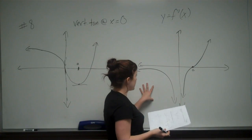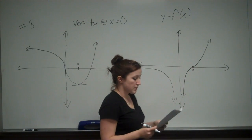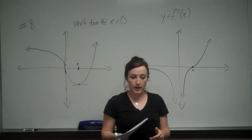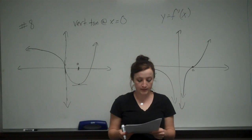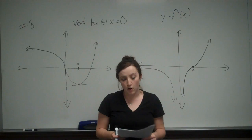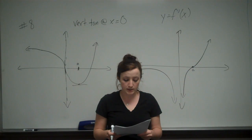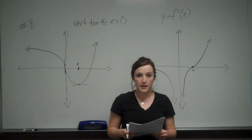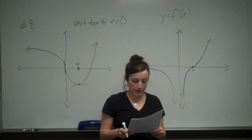So based off this graph, the only possible choice is answer C. Answer A is incorrect because it gives us the slope at 0. And it says that the slope of 0 is 0. And that's incorrect because we have a vertical tangent line, which means that our slope is undefined at that point.